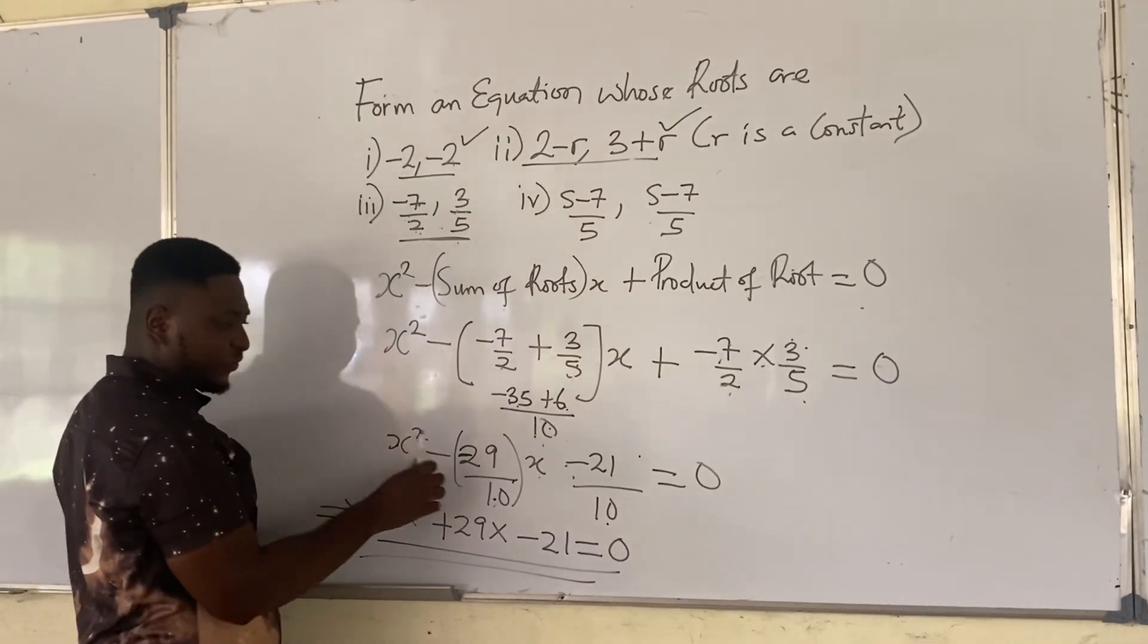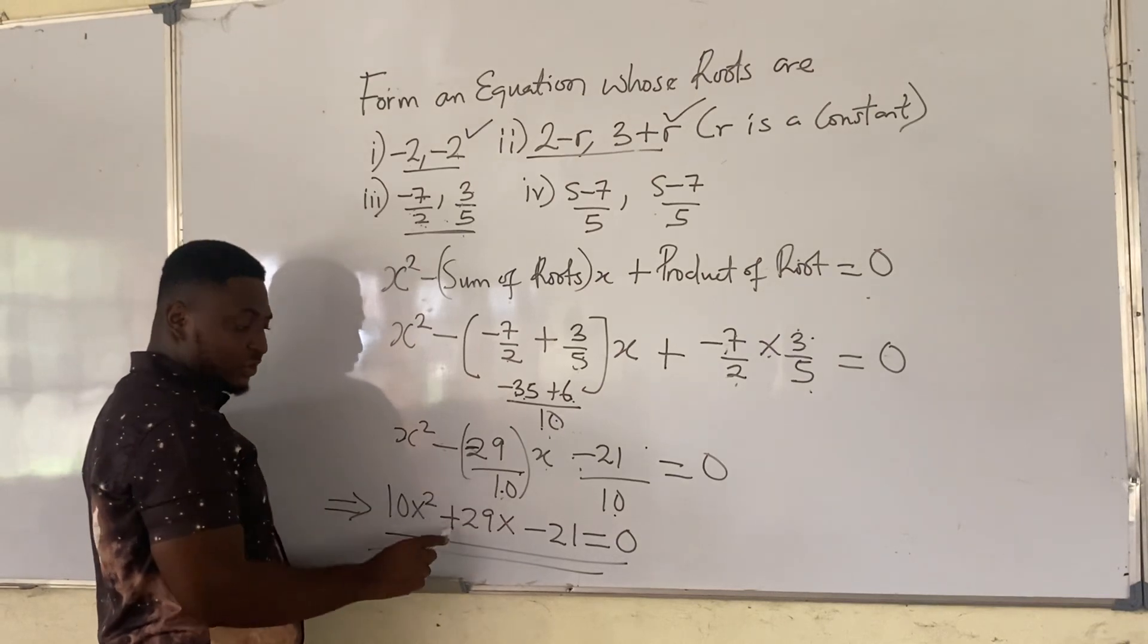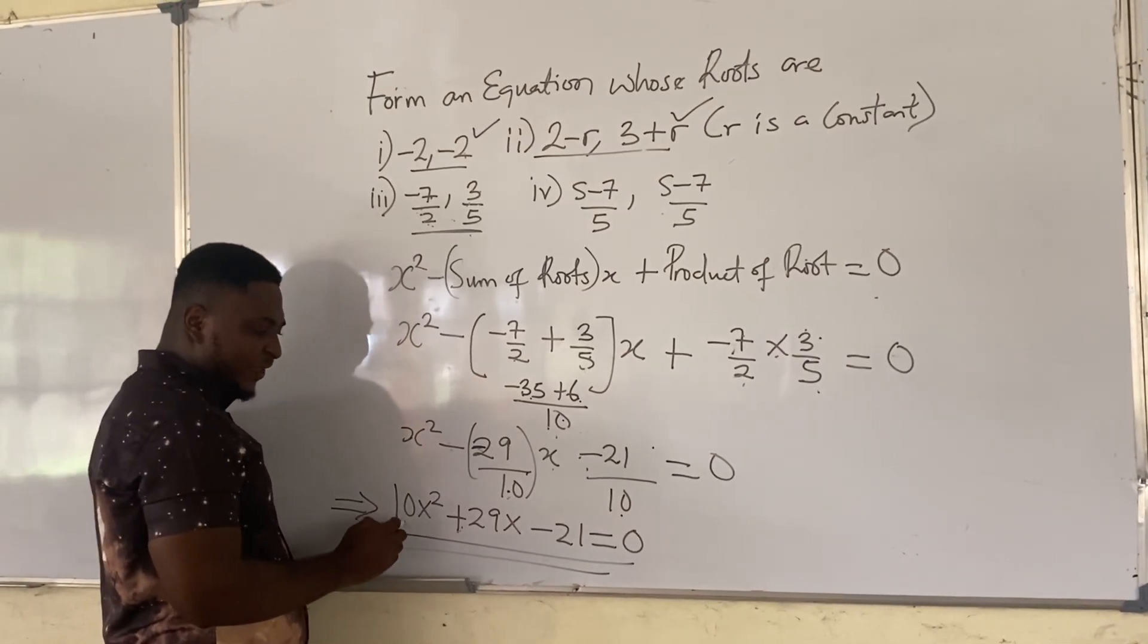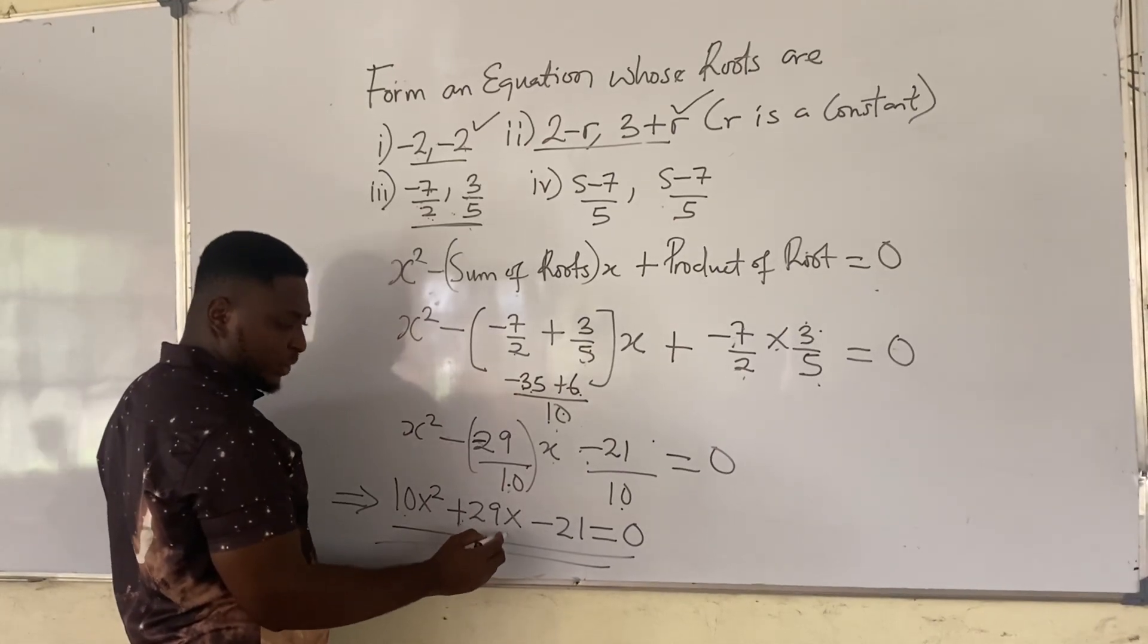Now when we get to this stage, we find out that we have minus and minus here. So minus times minus gives us what? Plus. So we have, why do we have 10X squared plus 29X minus 21?